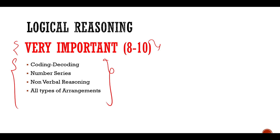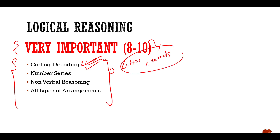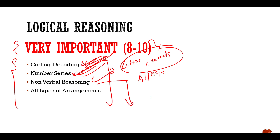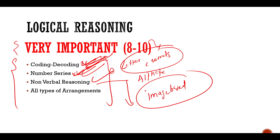The first important topic is coding-decoding — not just letters or words, but all types: relation coding-decoding, symbols, letters, and words. The second topic is number series, including alphabet series and any kind of series. The third is non-verbal reasoning, where you get image-based questions. Many candidates don't know there are many types in it.